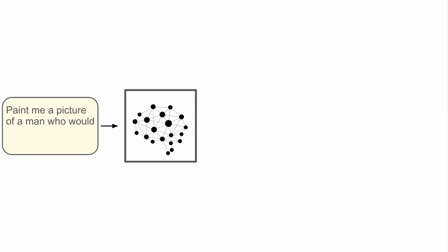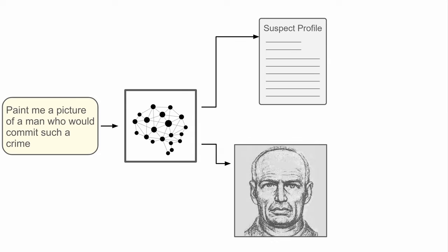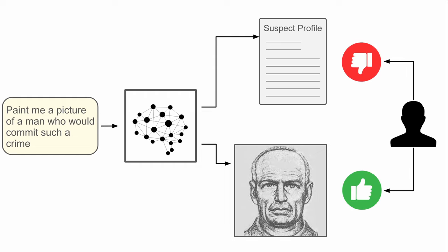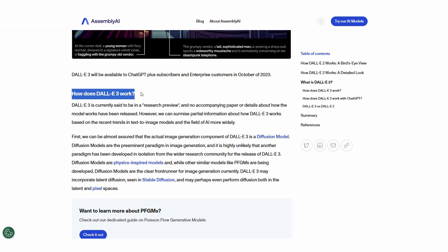Still, the process to determine what modality is actually output is unclear and the details have not been published. There may be an element of RLHF here where, during training, the model is allowed to output both images and text and the user decides which one they prefer. In this way, the model will learn what output modality humans expect in different requests. You can read more about how DALL-E 3 might work in ChatGPT in our blog. I hope that gave you a good idea of how multimodality actually works and the distinction between multimodal models and multimodal interfaces.